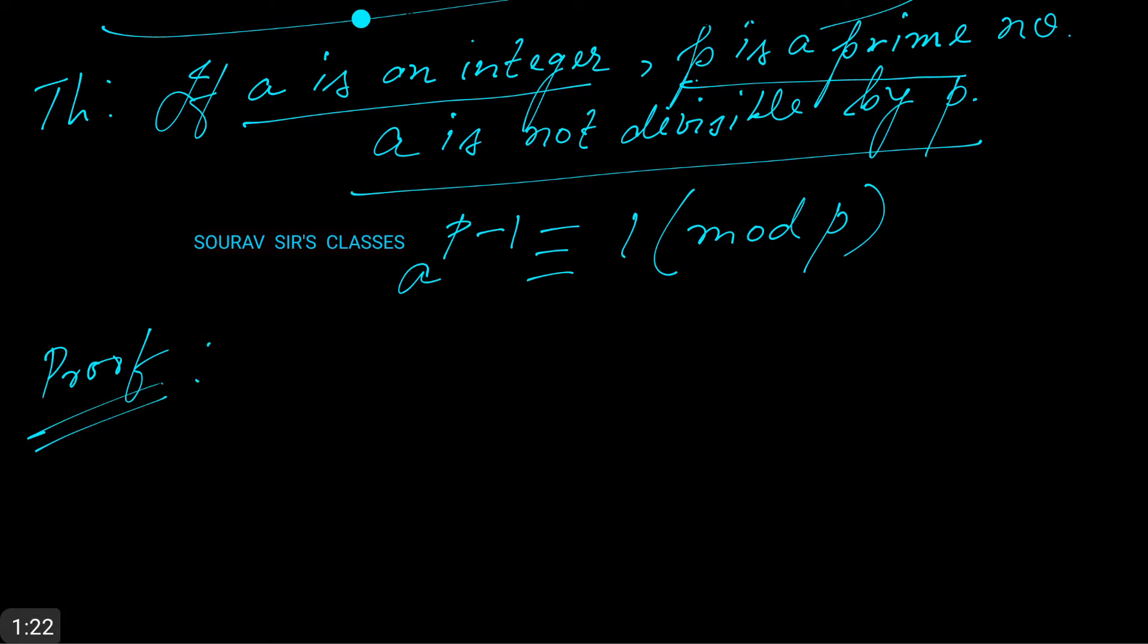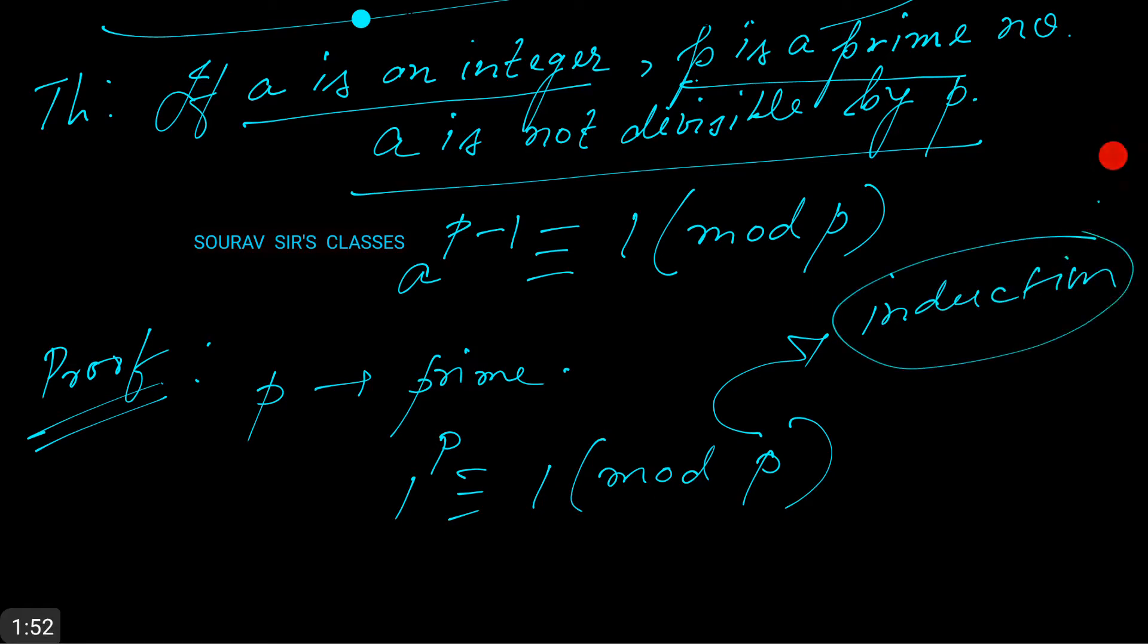We fix p as a prime number. The base case is 1 to the power p is congruent to 1 mod p. Please note that this p is prime, and hence we do not do induction on prime. It simply won't hold.